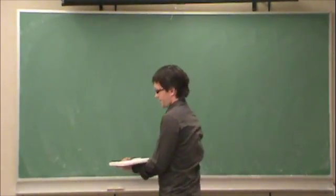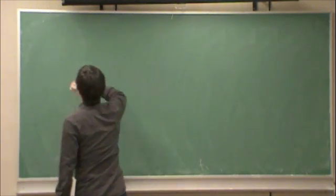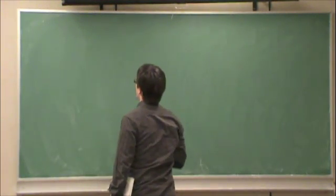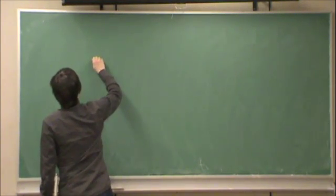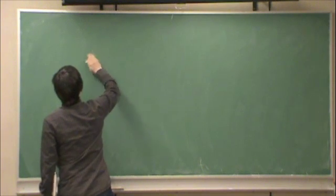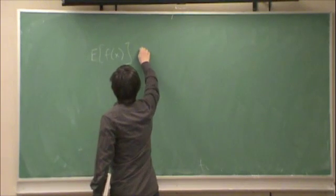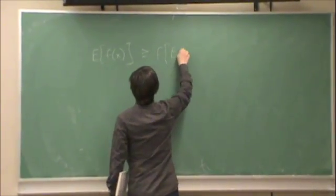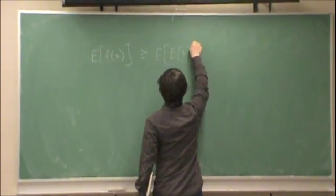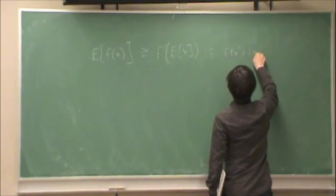Okay, so we proved Jensen's inequality. So, let's remind ourselves, we took a while proving that, so let's just remind ourselves exactly what we proved. We proved that the expected value of f of x is greater or equal to f of the expected value of x, if f of x is convex.